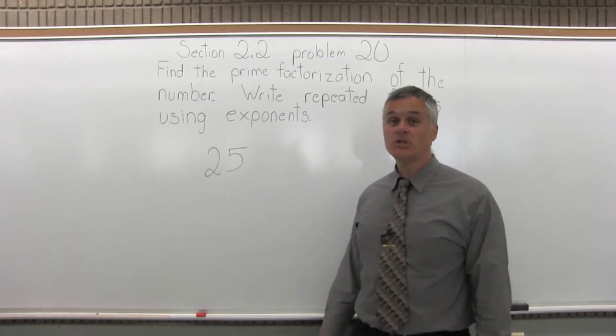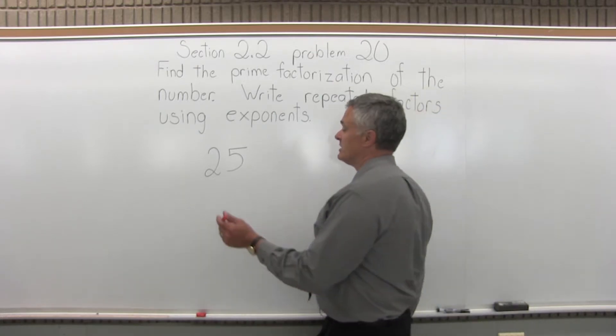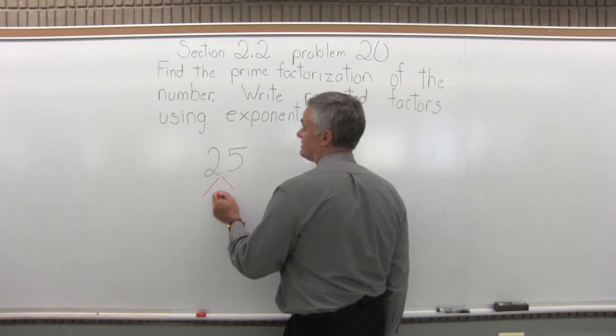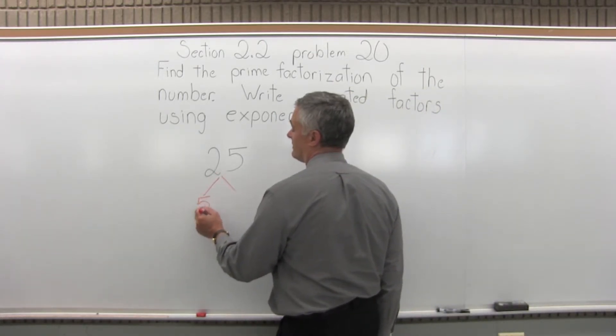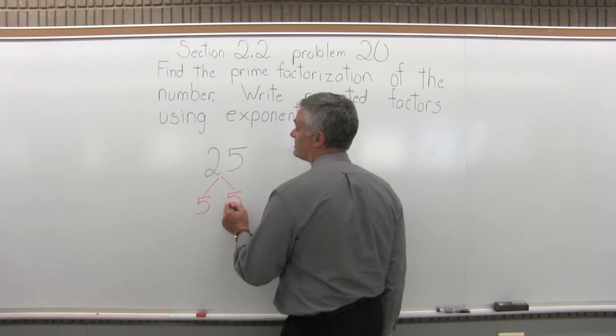So what primes multiply to make a 25? Split up 25 into the first thing you can see that multiplies to make a 25. So 5 times 5 is 25.